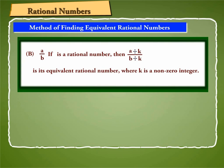B. If A by B is a rational number, then A divided by K by B divided by K is its equivalent rational number, where K is a non-zero integer.